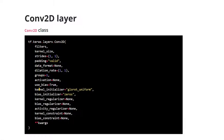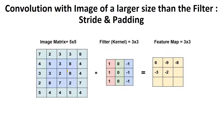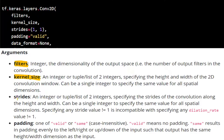Strides: in our previous videos, we talked about strides. The idea is to rotate the filter over the image. For each part of the image, we multiply the filter and sum up the numbers into a new feature map — the resulting map. Strides means how many columns and how many rows we move at a time when the image size is larger than the kernel size. We provide a tuple of two integers: the first number is for rows, the second for columns. Most of the time we use 1,1 — moving the kernel one column and one row at a time.